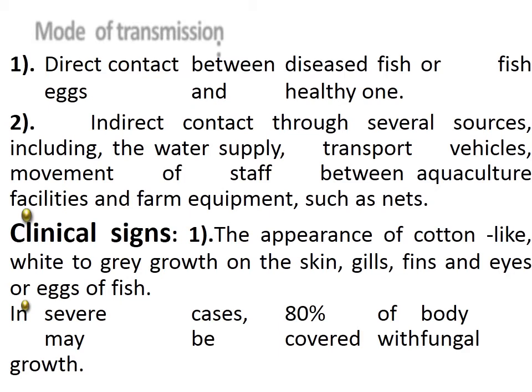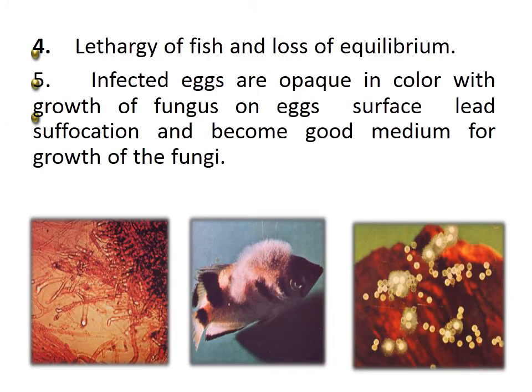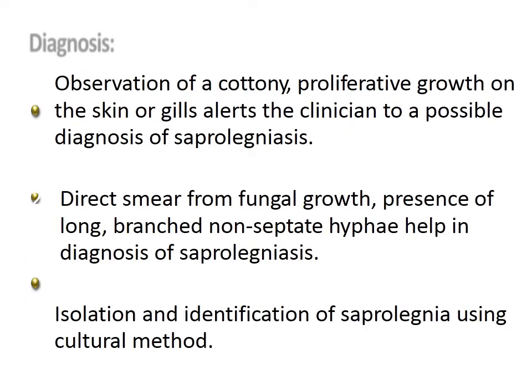In severe cases, 80% of the body may be covered with fungal growth. Lethargy and loss of equilibrium are signs. Infected eggs are opaque in colour; growth of fungus on egg surfaces leads to suffocation. Diagnosis involves observation of cottony proliferative growth on skin or gills, direct smear from fungal growth, and presence of long, branched, non-septate hyphae. Isolation and identification of Saprolegnia using cultural methods is also done.